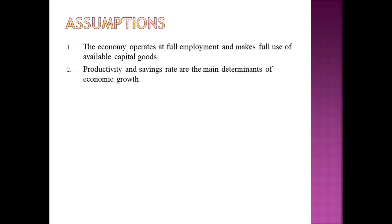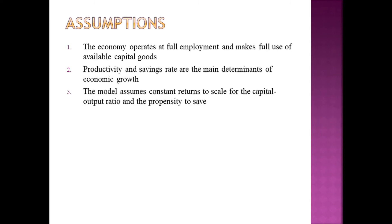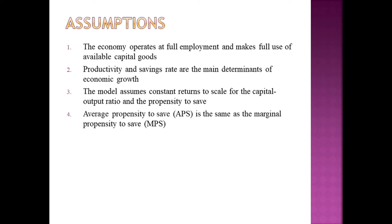The assumptions are: first, the economy operates at full employment. Second, productivity or output and saving are the two main determinants of economic growth. Third, we assume in the model that there will be a constant return to scale. Fourth, the average propensity to save, or APS, will be equal to the marginal propensity to save, MPS.